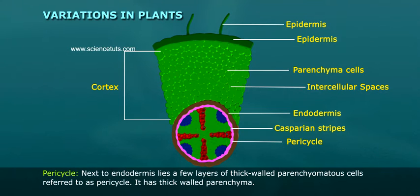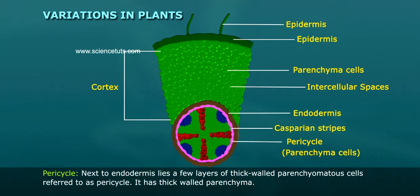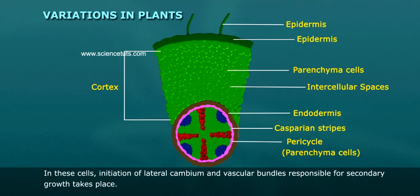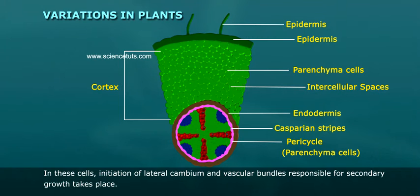Next to endodermis lies a few layers of thick-walled parenchymeter cells referred to as pericycle. It has thick-walled parenchyma. In these cells, initiation of lateral cambium and vascular bundles responsible for secondary growth takes place.